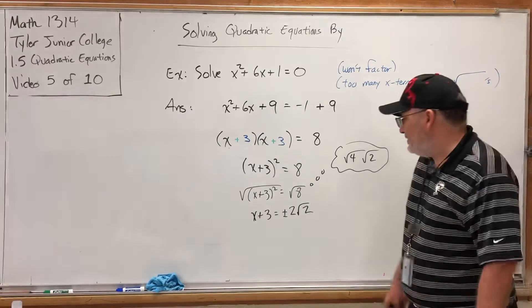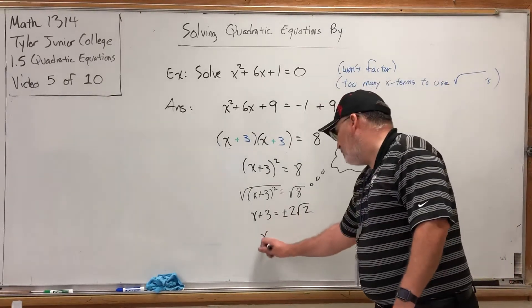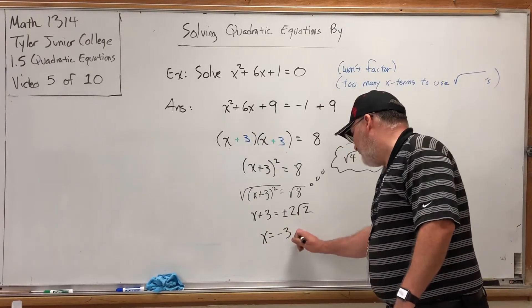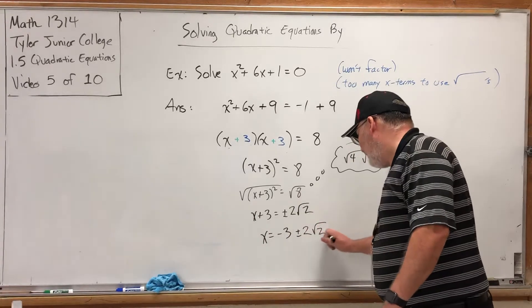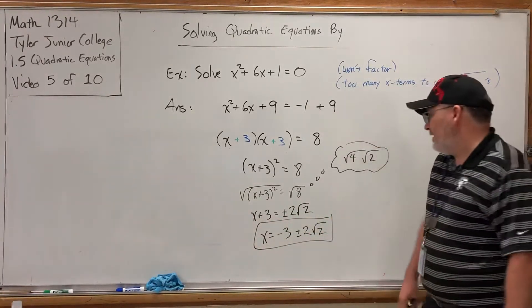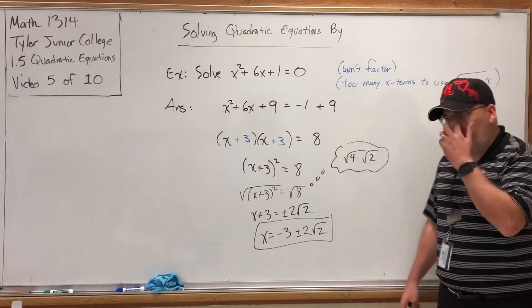Not finished yet, because the x isn't by itself, but I can subtract the 3 over, put it in front of the plus-minus, and I'm done. x is negative 3 plus or minus 2 times the square root of 2.